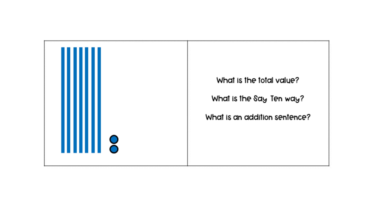Let's count the quick tens: 1, 2, 3, 4, 5, 6, 7. And the ones are 1 and 2, so the total value would be 72. The say-ten way would be 7 tens and 2, and the addition sentence would be 70 plus 2 equals 72.